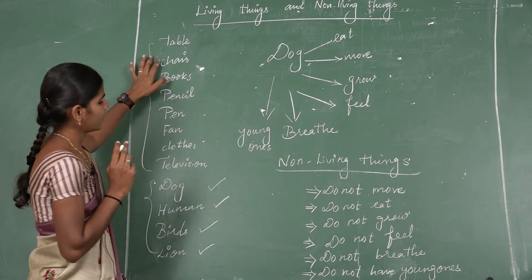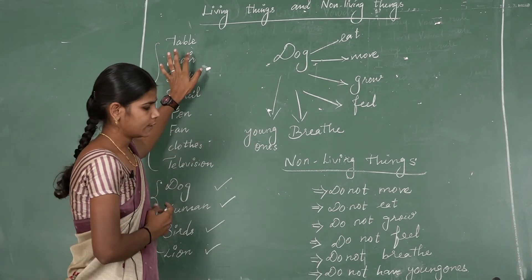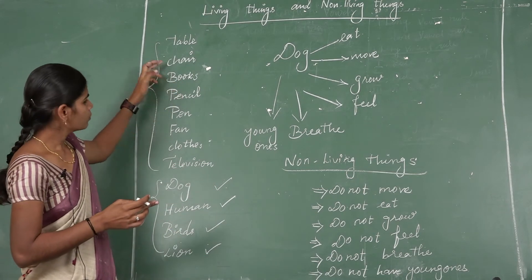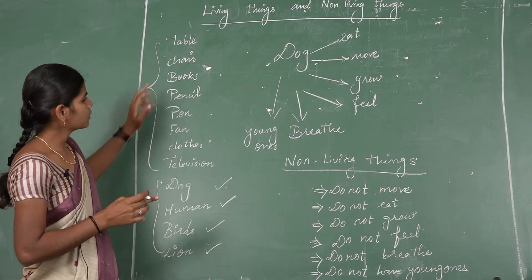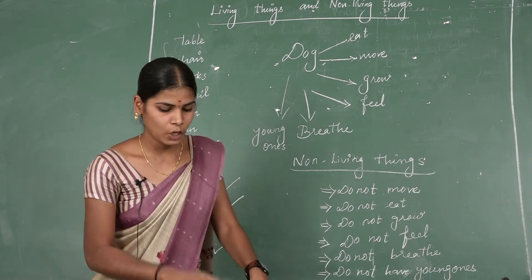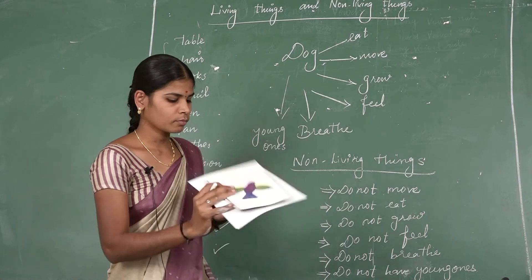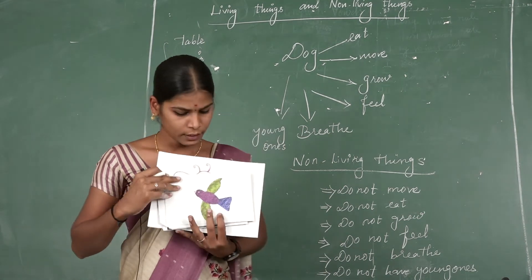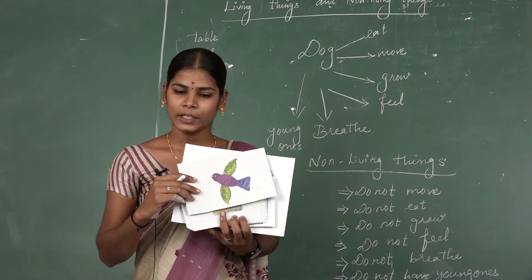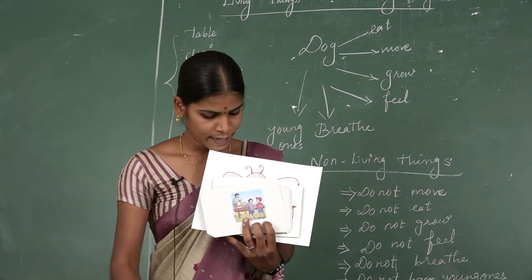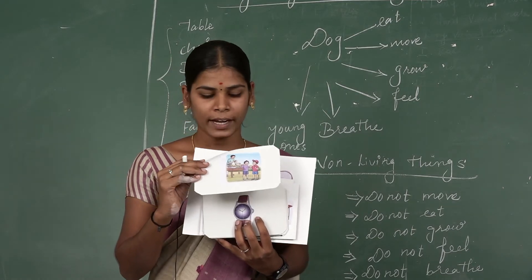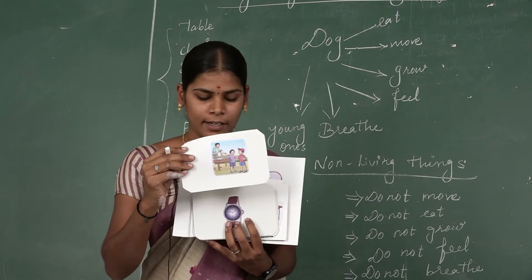For example, take a table - it cannot move from one place to another. Books, pens, all these things do not move. Now see some examples of living things. It's a bird - a bird can move from one place to another, so birds are living things. Humans also eat, can move, can grow - so humans are also living things.